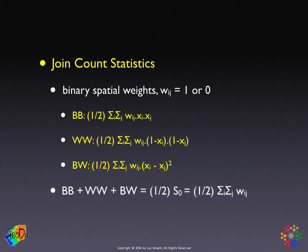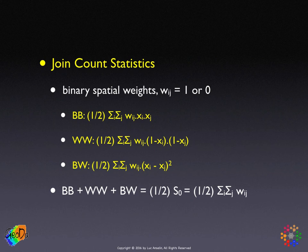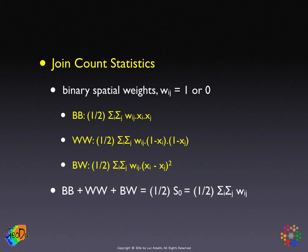With binary weights — neighbors get a 1, non-neighbors get a 0 — the BB joint count statistic is one-half the double sum of xi times xj times w(i,j). The factor of one-half is there because every join is counted twice: from i to j and from j to i. If i and j are neighbors and both have value 1, the product is counted; if they are not neighbors or don't share the same value, it is not counted.